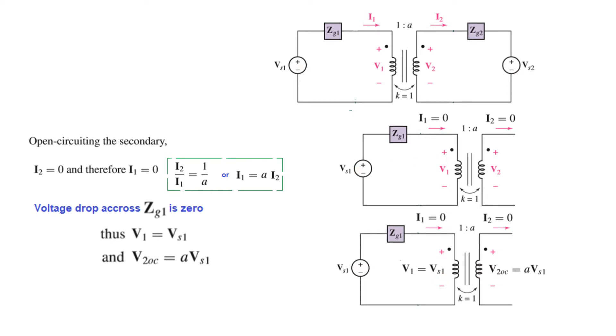So voltage V1 will be the same as the source voltage: V1 equals Vs1. Because of the transformer ratio, the output voltage is input multiplied by the turn ratio A. So V2 open circuit equals A times Vs1. Remember that A is the ratio of number of turns, so the open circuit output voltage is A·Vs1.